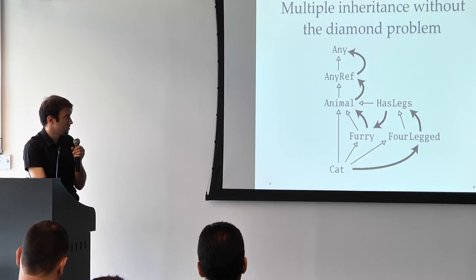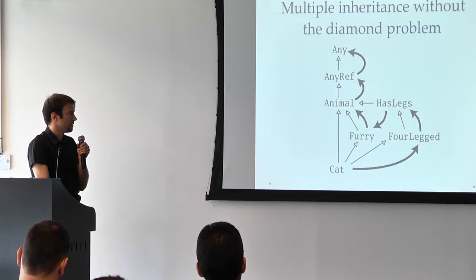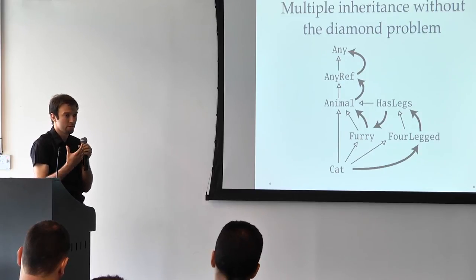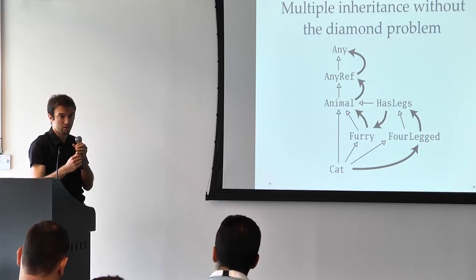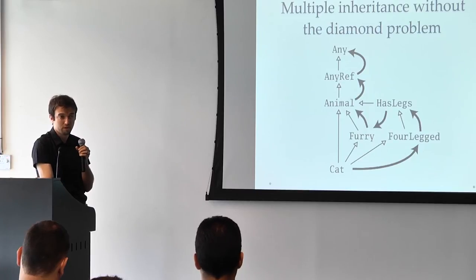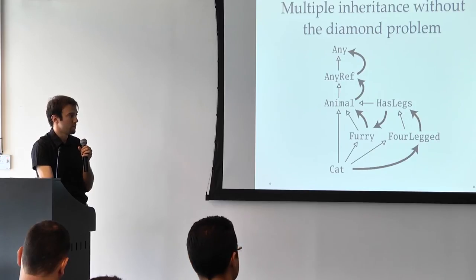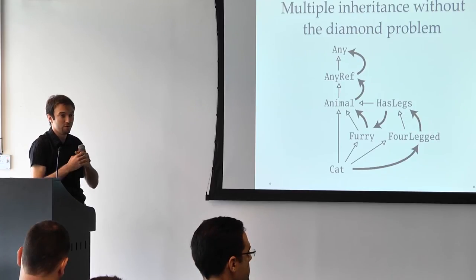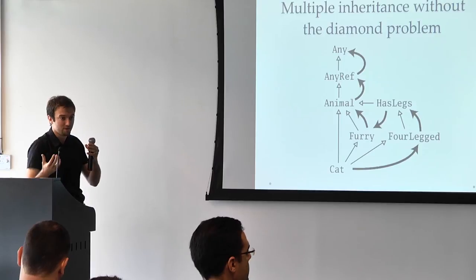The way that Scala solves this is using a technique which is called linearization, which allows us to guarantee a deterministic behavior of this inheritance. You can read more about this. And now we can basically define traits, which are like interfaces, but they can also contain implementations. Some of the implementations might be abstract, some might be concrete implementations. It's a hybrid between interfaces and abstract classes, in effect.